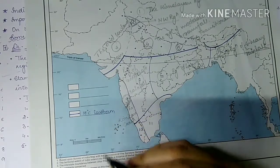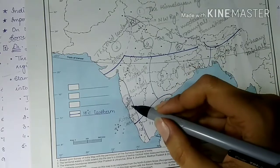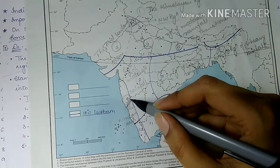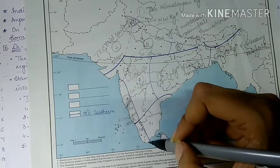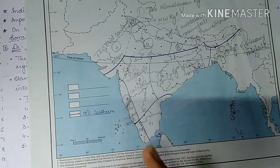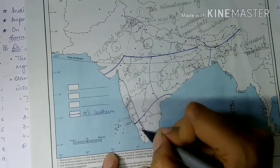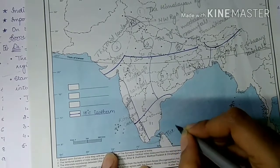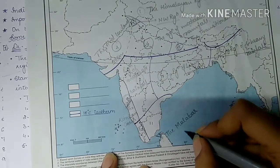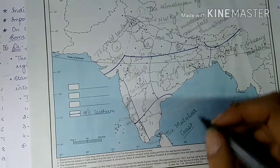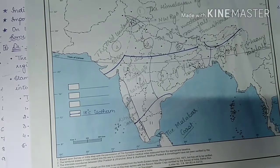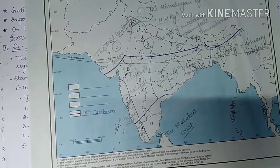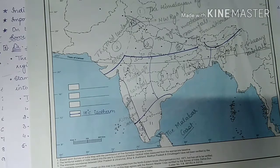The tenth region is the Malabar coast, which extends from Goa to Kanyakumari in the south. It receives heavy rainfall of over 250 centimeters. The temperature is in the vicinity of 27 degrees Celsius, and the range of temperature is also 3 degrees Celsius. Thiruvananthapuram is the representative city.